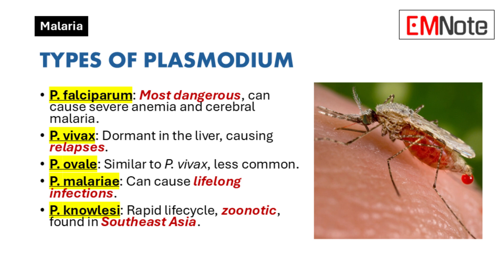Plasmodium malariae can lead to chronic infections that may last a lifetime if untreated. It is associated with long-term health issues such as nephrotic syndrome, due to significant protein loss through urine. This species is found worldwide but is less common than others.